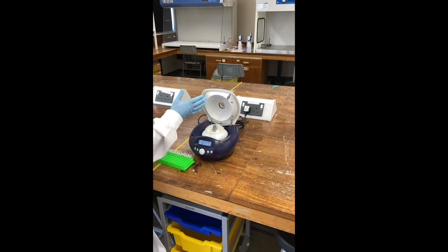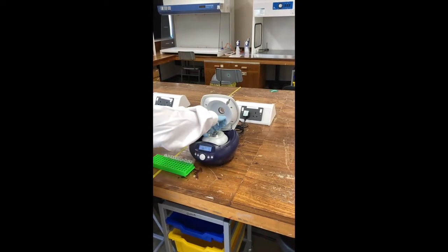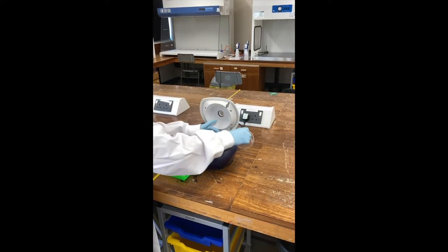So the first thing you want to do is open up the centrifuge. There's a little lid inside it like that. If you pull the top of that, you just release it and you can take it off.